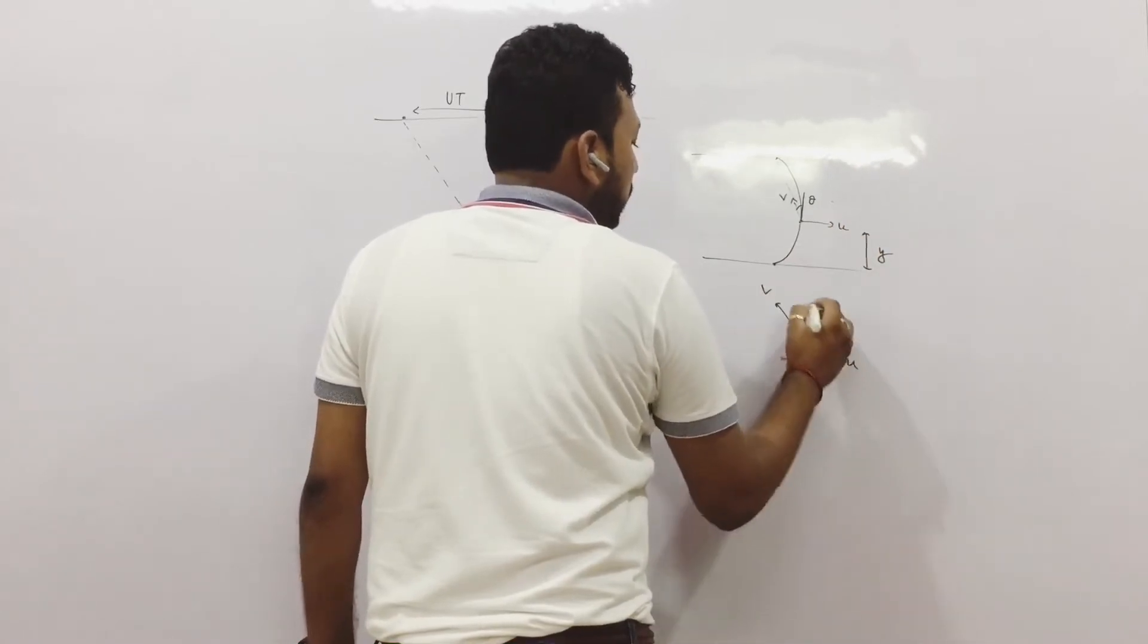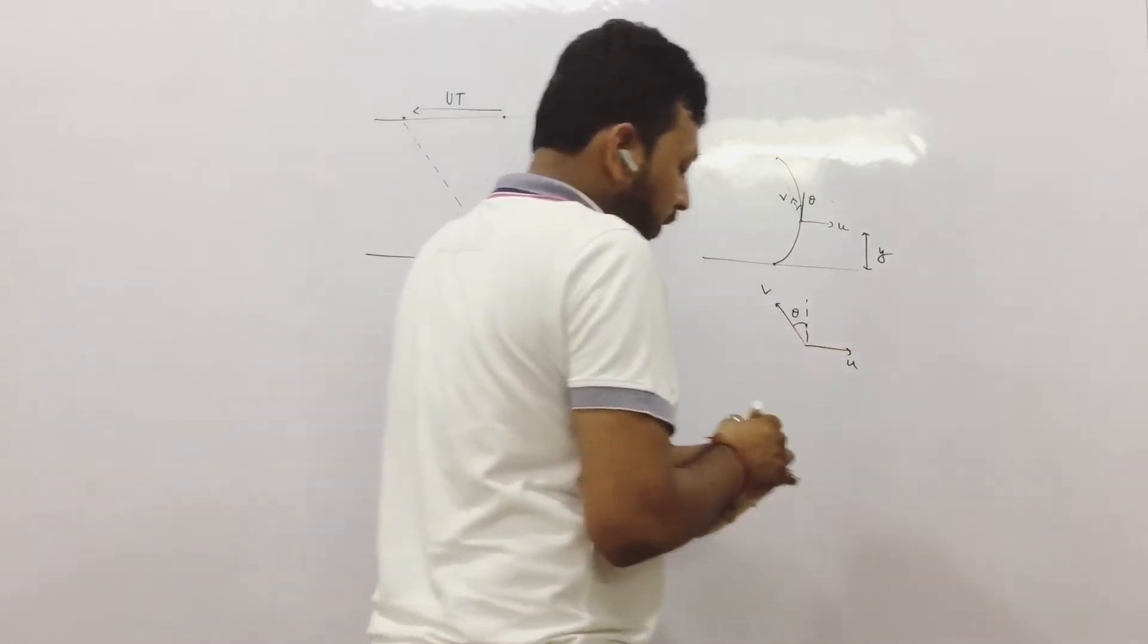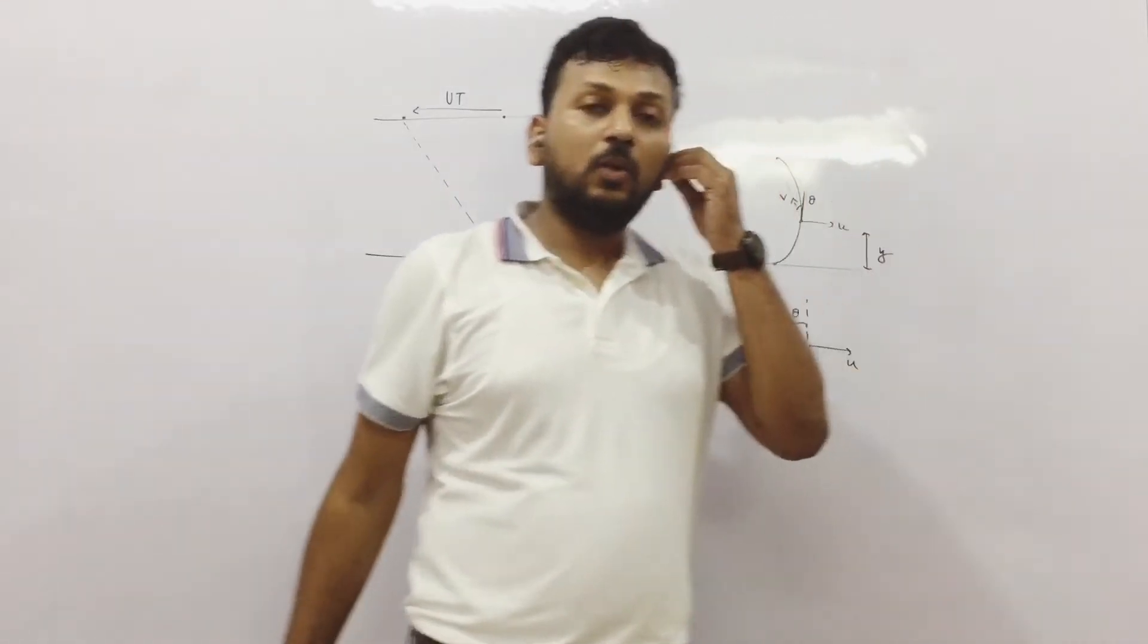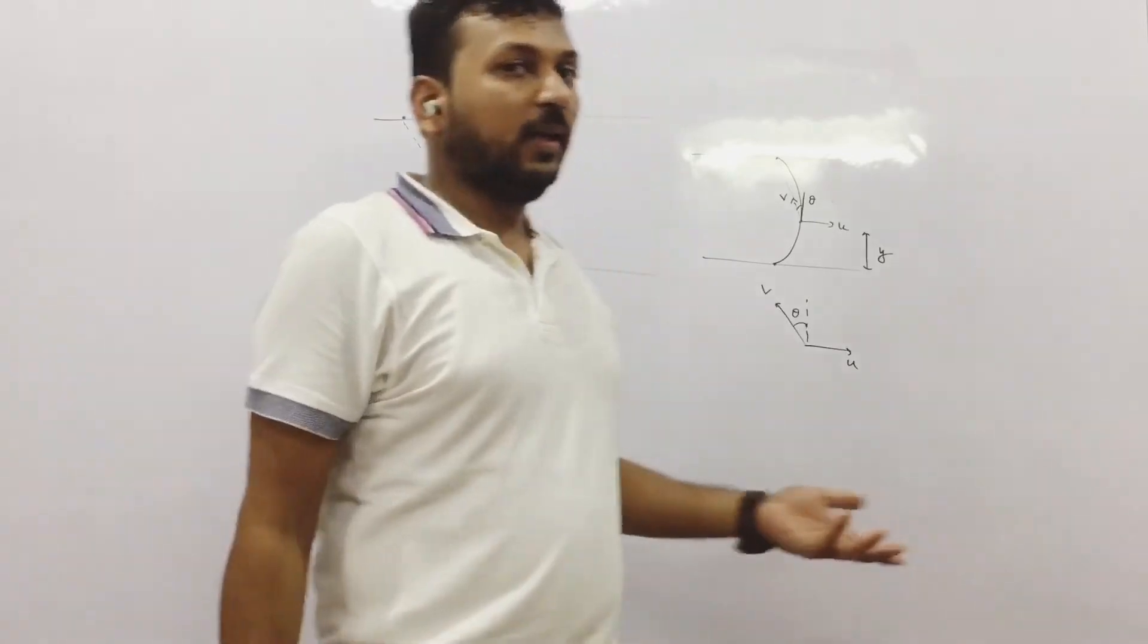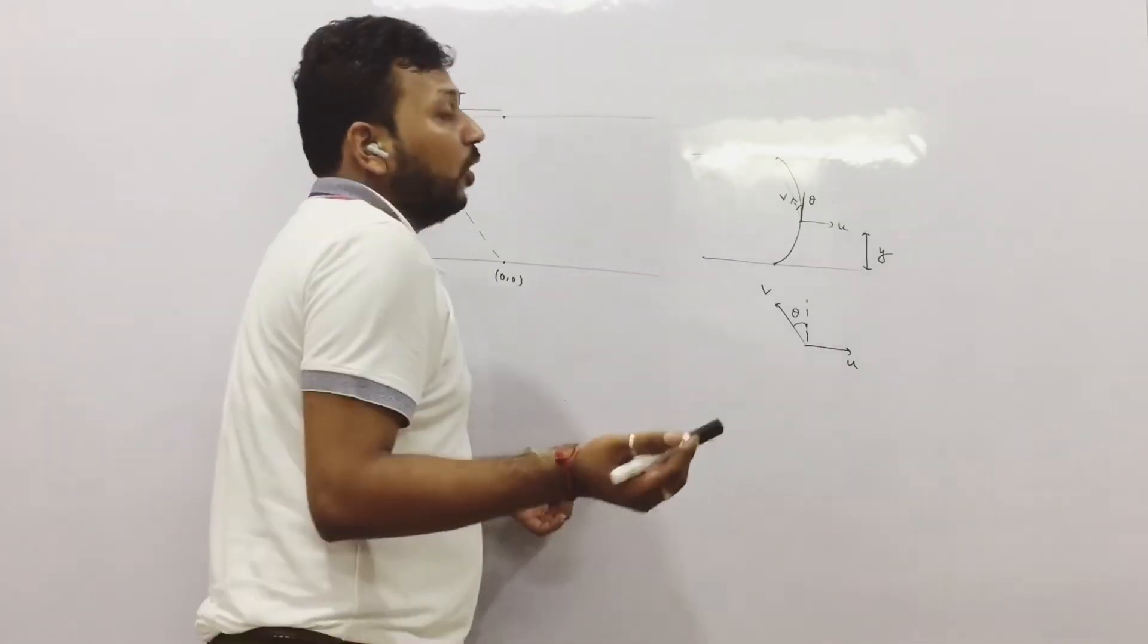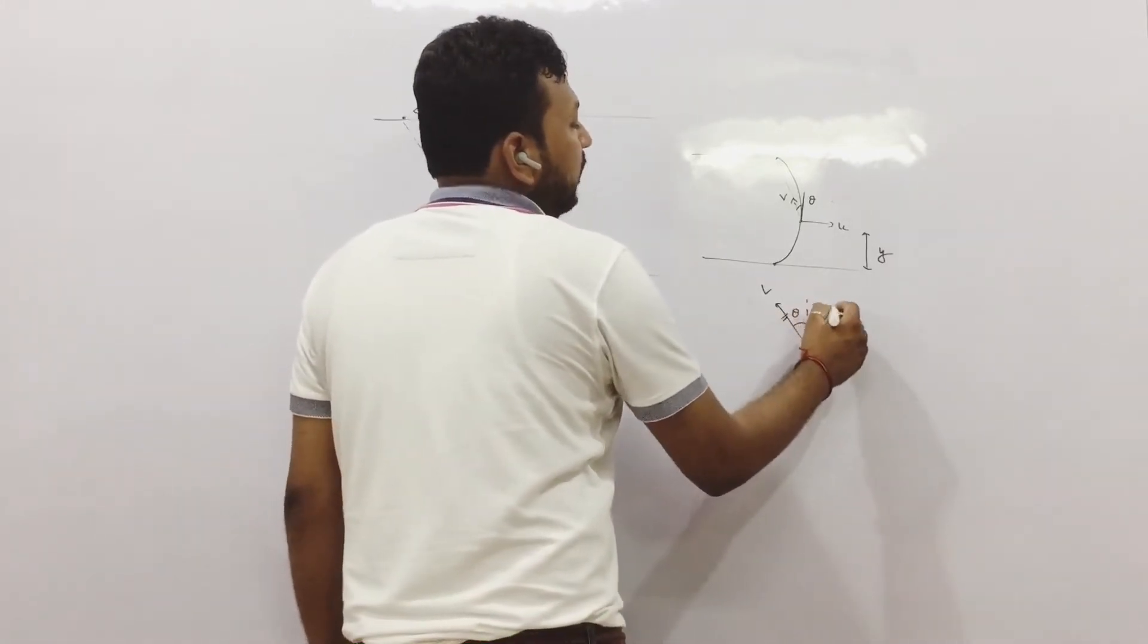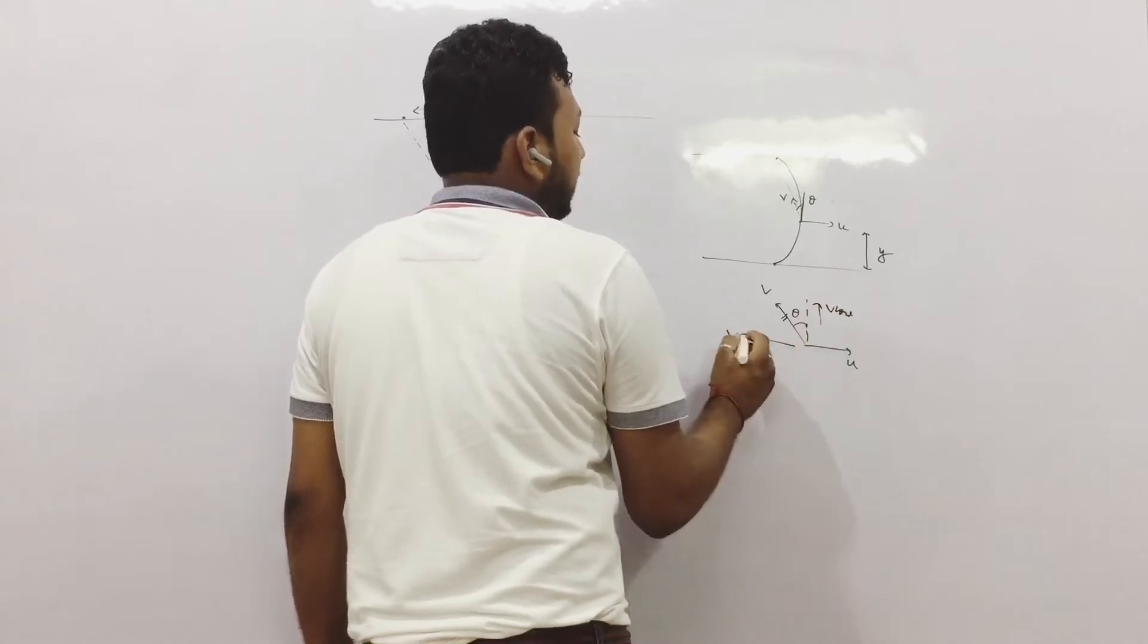So we can see this is b, this is u, this is theta. So you know if it is something very new to you, so you may have to see this video 2-3 times to get it completely. You may not be able to understand it properly in one time. So let us resolve: this is v cos theta and this is v sin theta.